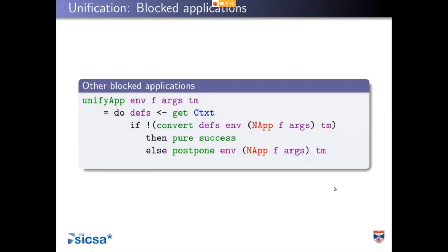One reason it's useful to have convert around is that we can defer to it occasionally during unification. There are a couple of other places where it's useful to have it around — for example, there is a recheck. After you've finished elaboration, there's just a small kernel checker for the thing that has been constructed, and then you would use convert rather than unify. So it's a useful thing to have around even if it's not strictly necessary for the implementation.